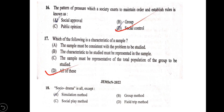Next question: sociodrama is all of the following except — option A: simulation method; B: group method; C: social play method; D: field trip method. In a small group setting, field trip method allows learning of educational objectives. Sociodrama is a simulation method, so option A — simulation method — is the correct exception answer.